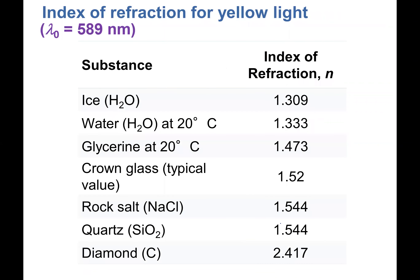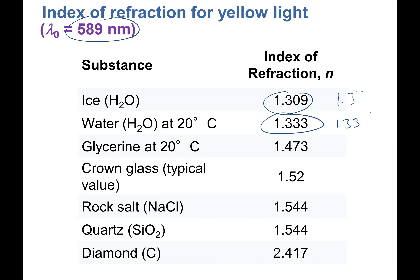Here's a table of indices of refraction at 589 nanometers. Water is 1.33; ice is 1.3, so sometimes we use 1.3 for water in general. Crown glass is about 1.5; there are different types like acrylic, crown glass, ranging from about 1.5 to 1.55. Rock salt, quartz, diamond and others have increasing indices, meaning increasingly dense materials.